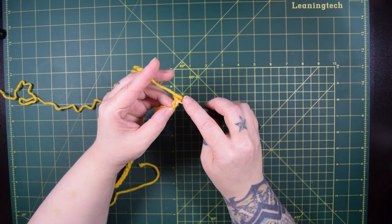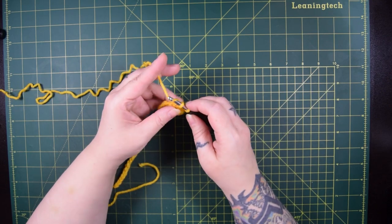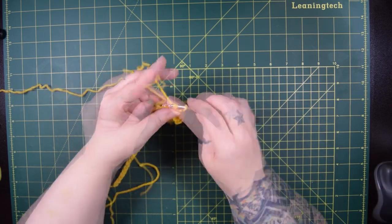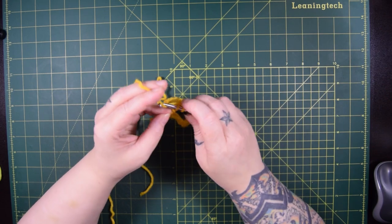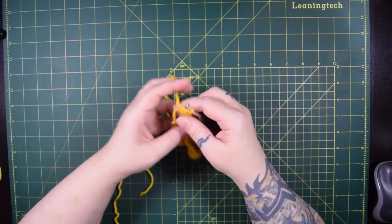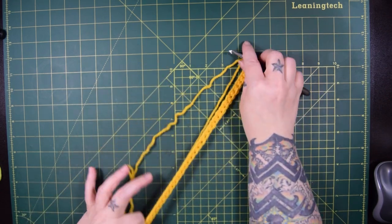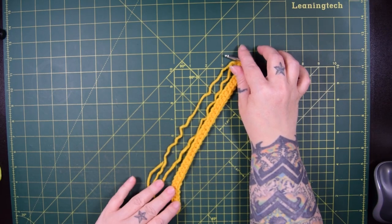After the chain, single crochet 35. And then it's time for the really fun part.